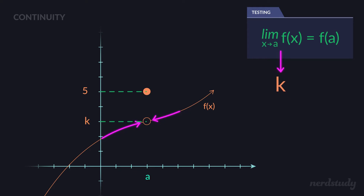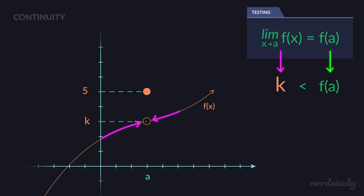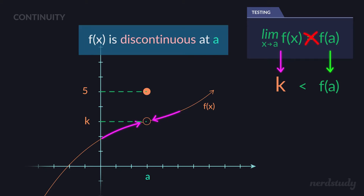Does k equal f(a)? It certainly does not, because f(a) equals this value up here, much higher. The limit equals k, which is a smaller number than f(a) because the point is defined higher. So we know for a fact that they are not equal to each other — this number is not equal to that number — and we can automatically say that the function is discontinuous at point a.